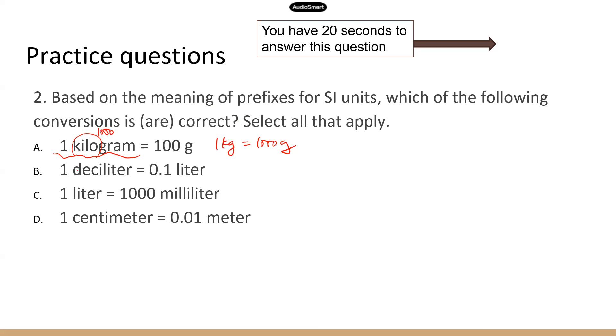One deciliter. Deci means one tenth. So one deciliter is one tenth of a liter, and that is 0.1 liter. So that's correct. One liter is 1,000 milliliter. Milli means one thousandth. So one milliliter is one thousandth of a liter or 0.001 liter. And one liter is 1,000 milliliter. So C is also correct.